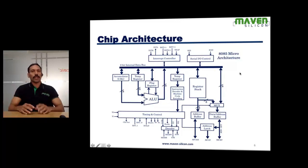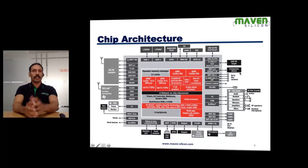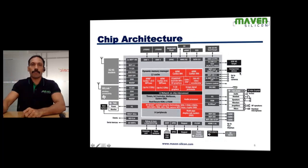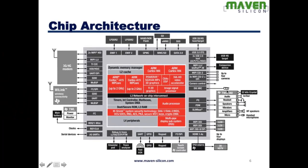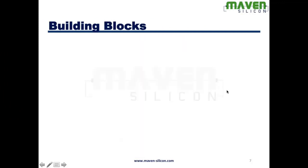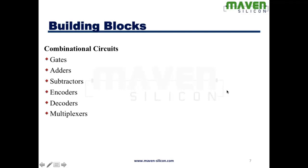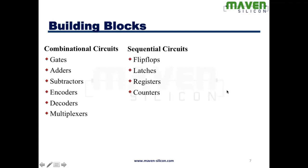This is how you design an IP, and the chip will have various IPs. As part of digital, we deal with only digital stuff, though the chip may also have some analog IPs. You need to understand how to design an IP and how to design the architecture using various digital building blocks. As part of this course, I'm going to teach combinational circuits and various building blocks like gates, adders, subtractors, encoders, decoders, and multiplexers. Then I'll walk you through sequential circuits like flip-flops, latches, registers, and counters. After that, you'll be able to understand finite state machines and memories.